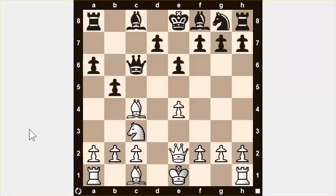Here's our second exercise for today. In this position it is white's turn to move. Use your calculation technique and see if you can find a tactic for white. Pause the video to think about it. The first step is to find all the threats — black is threatening to capture our bishop, so we have to bear that in mind and make sure we don't lose the bishop in whatever we do.